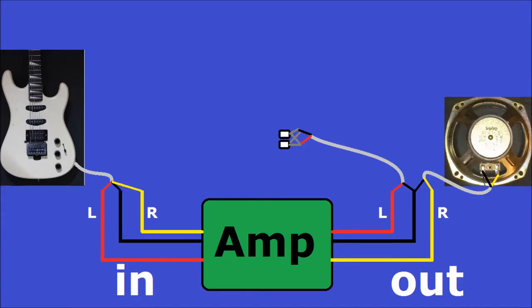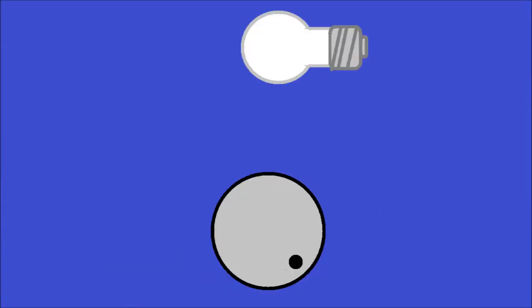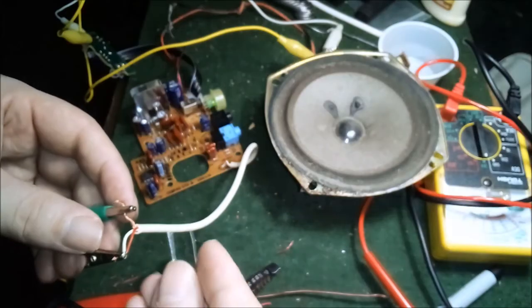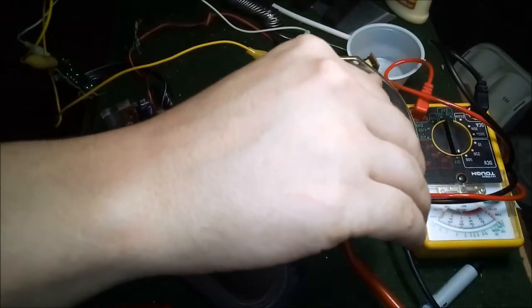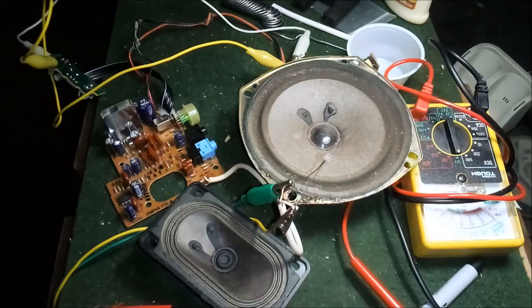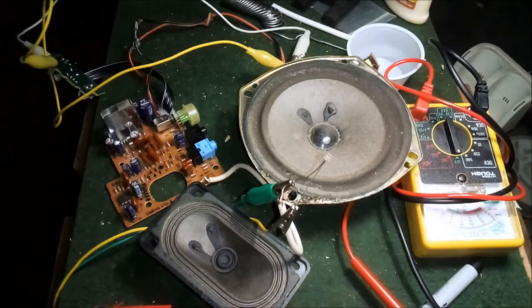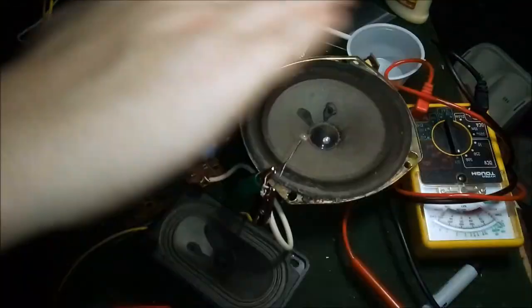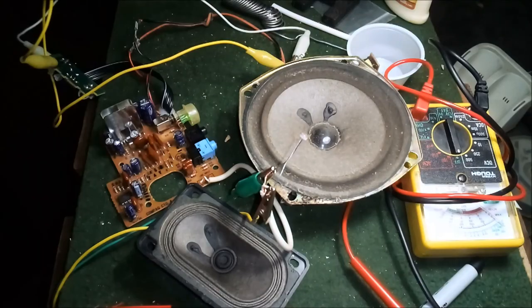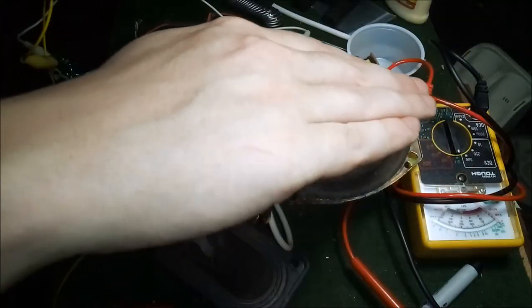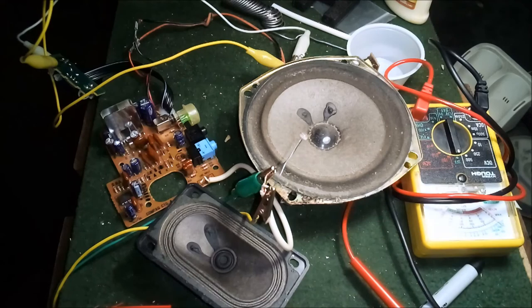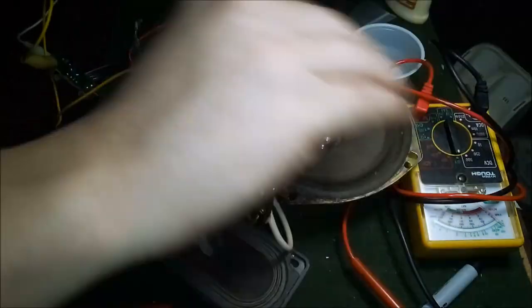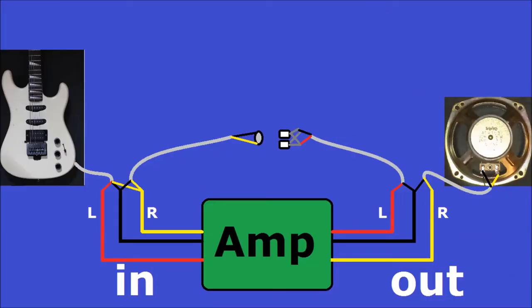Now we're gonna connect this to the input. And in this configuration, it's basically gonna act like a light-controlled volume knob. I'll hook this up real quick and give you a demonstration. I'm sure you can see how this could be used to make a tremolo.